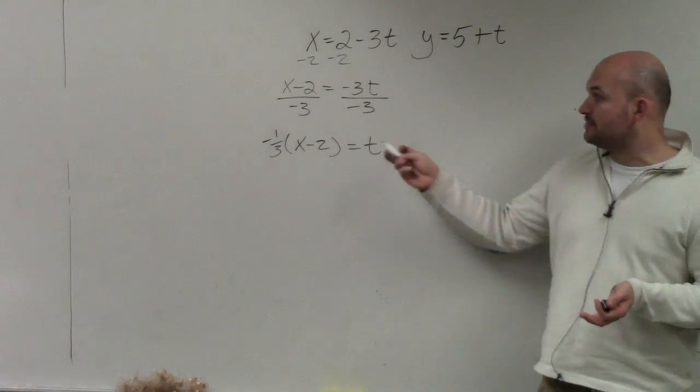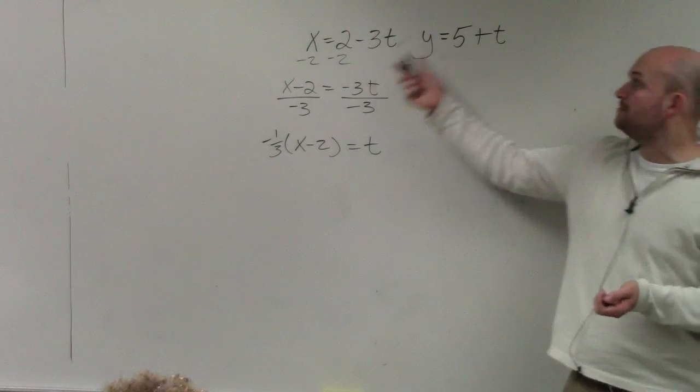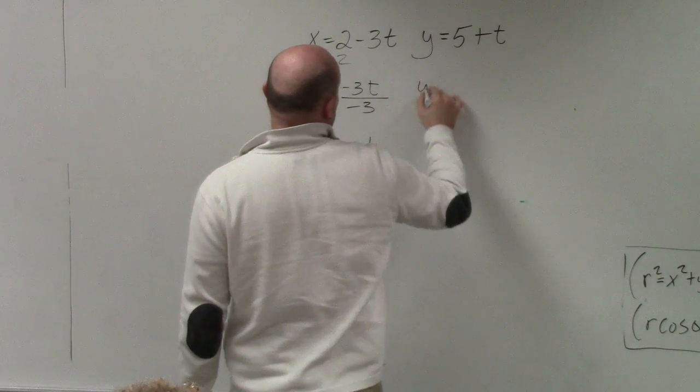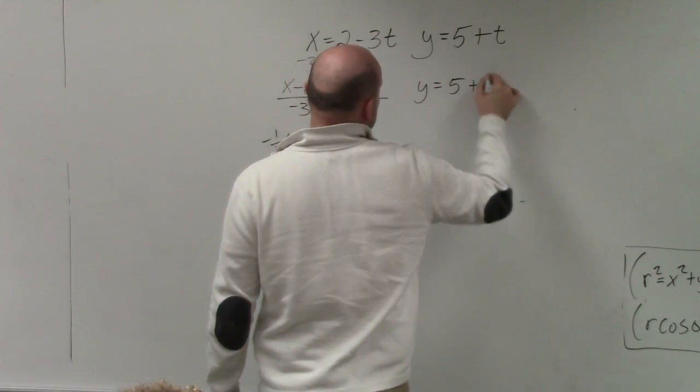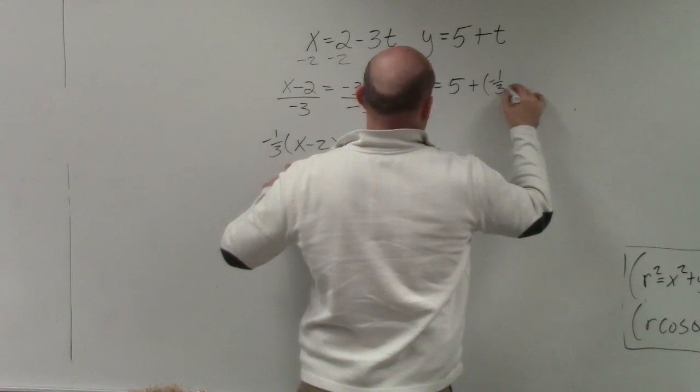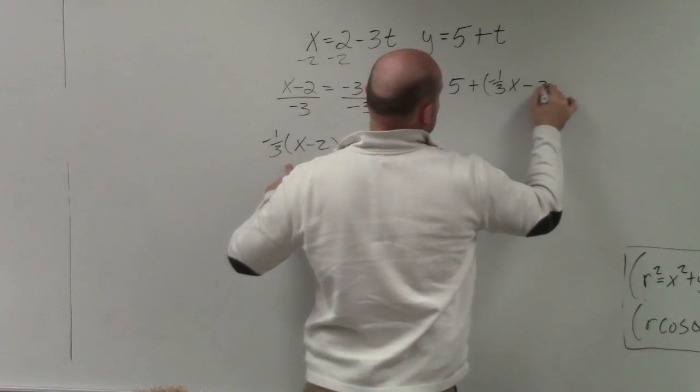Then, all we simply do is we plug the value of t back into our equation y, and then simplify. So I have y equals 5 plus, well, rather than plugging t, I'm going to plug in what it's equal to, which is negative one-third x minus 2.